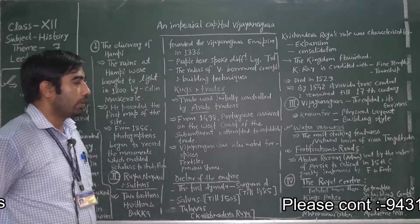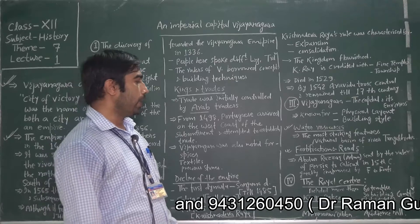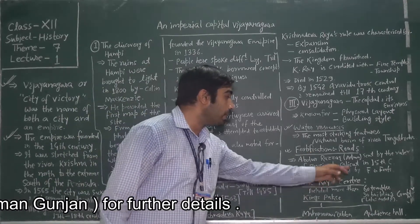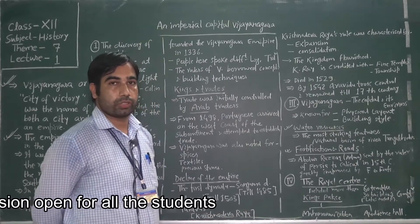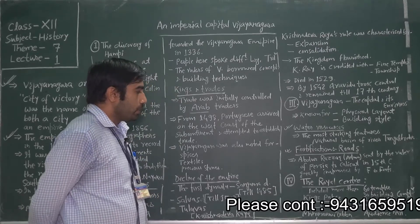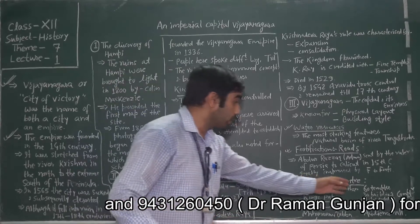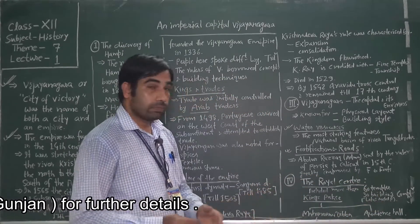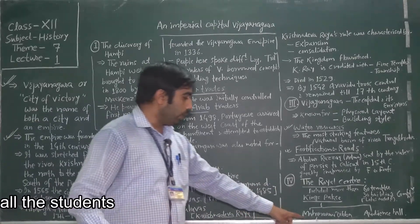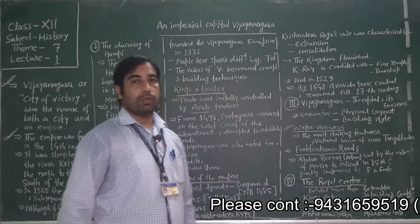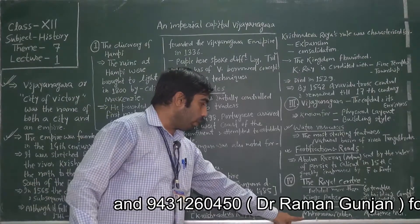Abdur Razzak, an administrator sent by the ruler of Persia to Calicut in the 15th century, was greatly impressed by the fortifications and forts. The next topic is the royal center. Here we will see approximately 60 temples and about 30 building complexes.